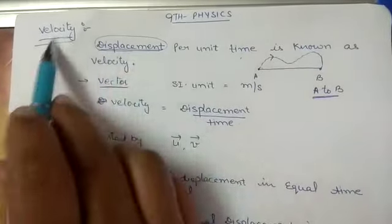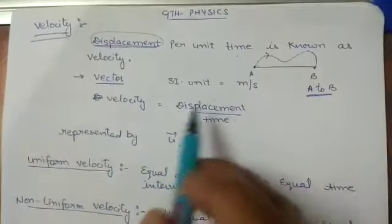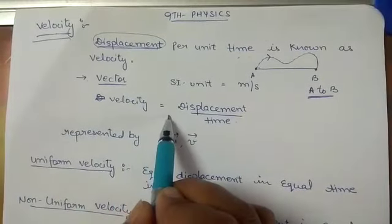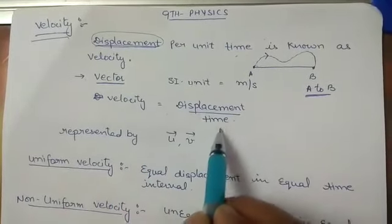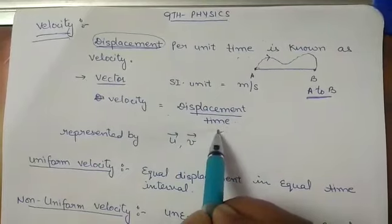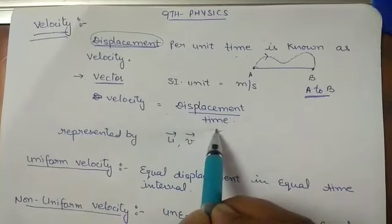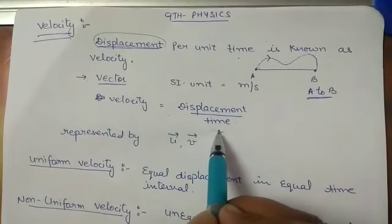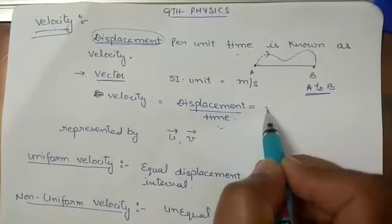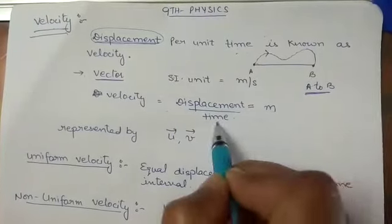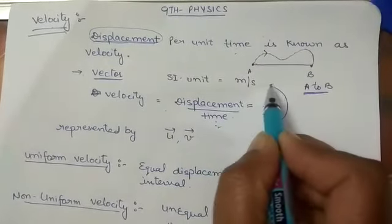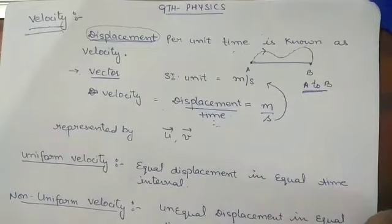According to the definition, if we convert it to a formula: velocity equals displacement over time. From this you can calculate the SI unit. The unit of displacement is meter, and the unit of time is second, so the unit of velocity becomes meter per second.